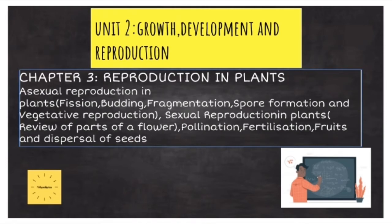The second unit is called Growth, Development and Reproduction. The first chapter under Unit 2 is Reproduction in Plants. Here we will study both the asexual as well as sexual methods of reproduction in plants. Under asexual reproduction, we will study about fission, budding, fragmentation, spore formation, as well as vegetative reproduction. Under sexual reproduction in plants, we will study about the parts of a flower, the process of pollination, fertilization and finally about the structure of fruits and the dispersal of seeds.